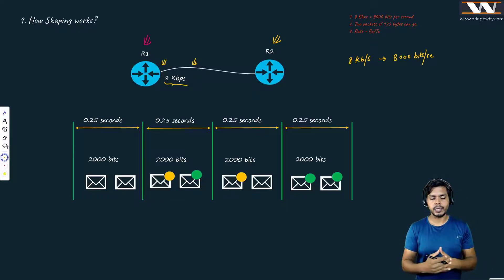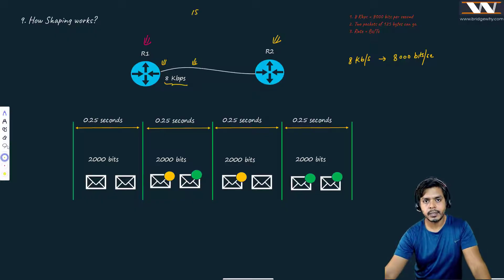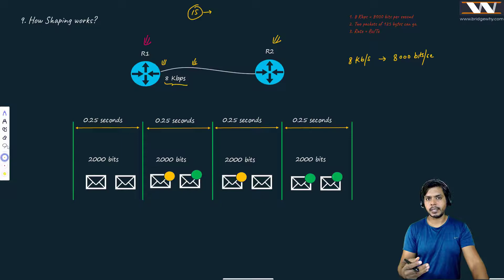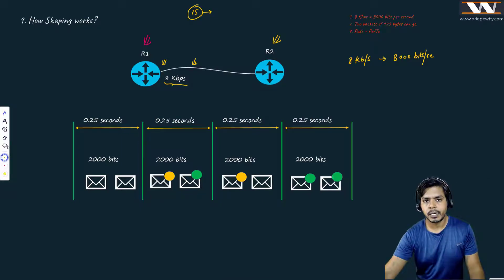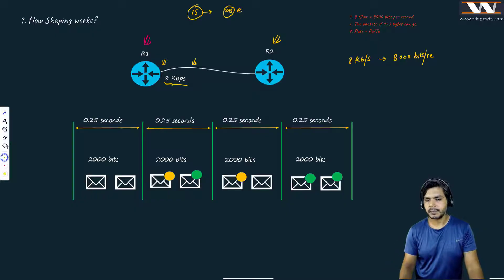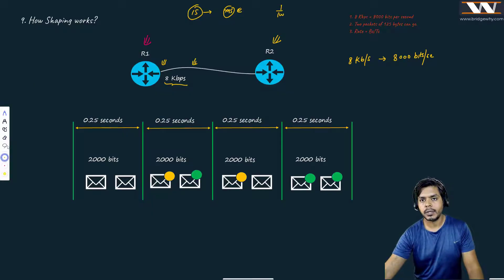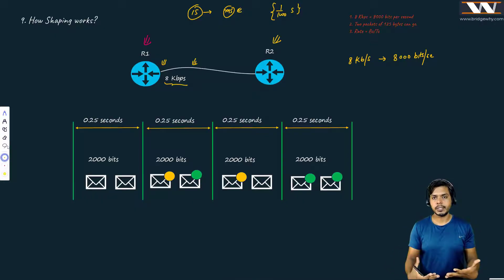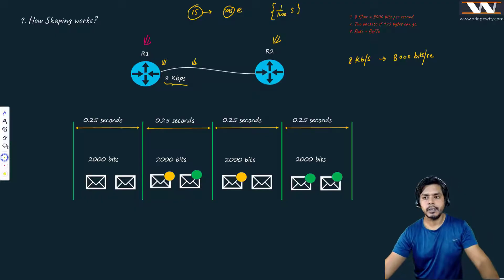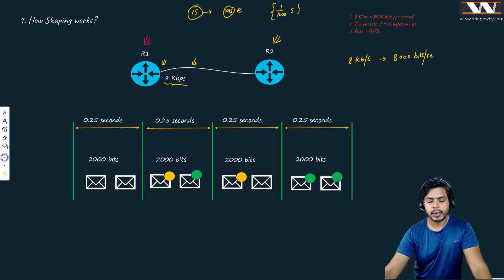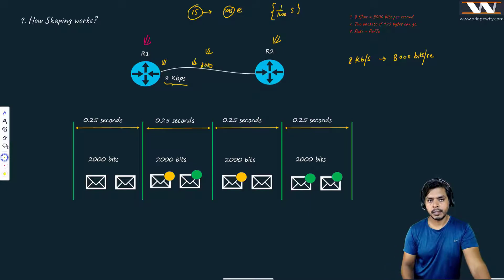I want to understand this in terms we can perceive. We understand hours, minutes, and seconds, but milliseconds are hard to process. So I'm giving examples in terms we understand. In one second, this interface can send 8000 bits — that is the speed and the bandwidth of this interface.